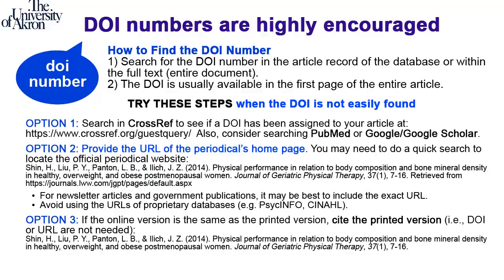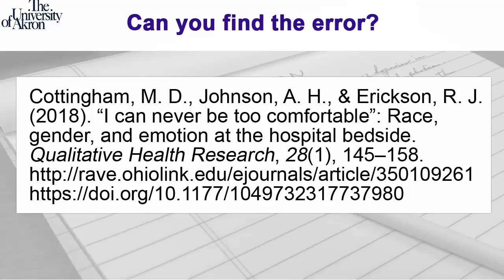Now that you have reviewed some guidelines, how well will you do in finding mistakes in a citation? Let's find out. We are going to put some references in the next slides. Your job is to figure out if there is anything wrong and how to fix it. Here is the first reference. The reference appears correct, but the problem is that there are two URLs. One URL is the DOI number and the other is a URL from a proprietary database.